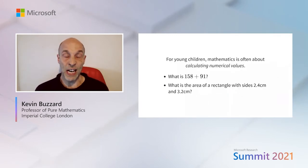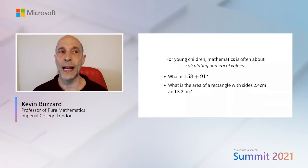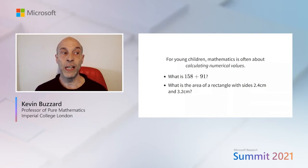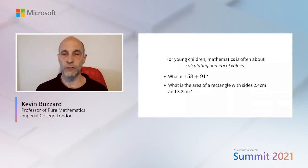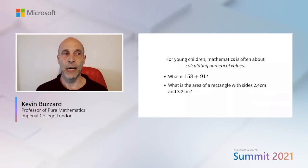We're going to start by talking about what mathematicians do. For very young children, most people meet mathematics as calculating numerical values. First we learn to count, then addition, subtraction, and multiplication. Then we learn algorithms such as column addition. Faced with questions like what's 158 plus 91, we have a method — we write the numbers down with units in the same column and tens in the same column, and add line by line. We also learn geometry at a young age, which gives us a new source of questions involving calculations.